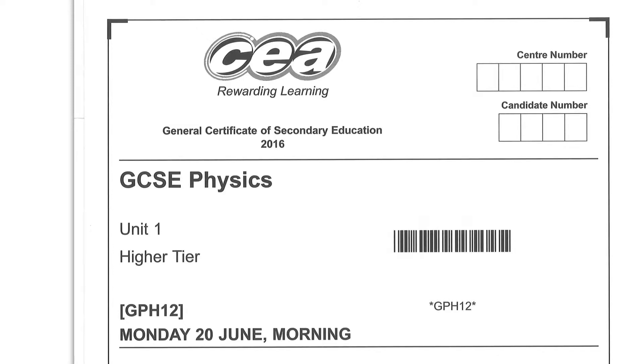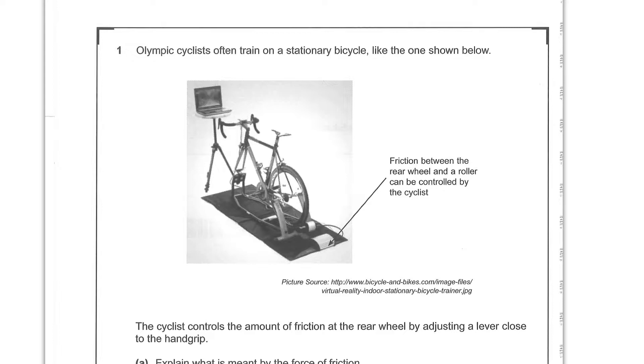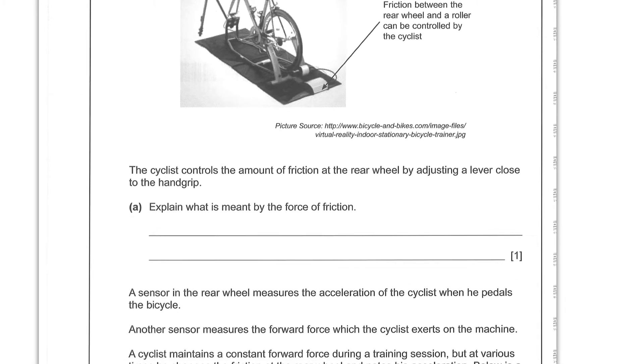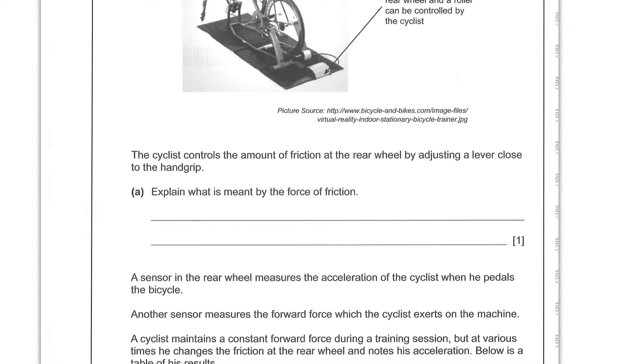We are looking at GCSE Physics unit 1 higher tier from 2016. Question 1. Olympic cyclists often train on a stationary bicycle like the one shown below. The cyclist controls the amount of friction at the rear wheel by adjusting a lever close to the hand grip.